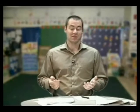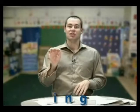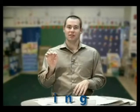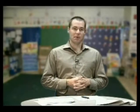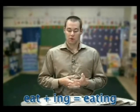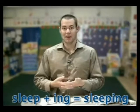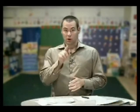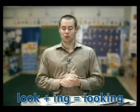To form the present progressive is very easy. All we do is add an -ing to the end of the base verb. For example, eat becomes eating, sleep becomes sleeping, or look becomes looking.